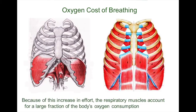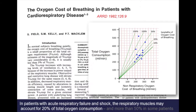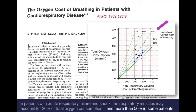Because of this increase in effort, the respiratory muscles account for a large fraction of the body's total oxygen consumption. In healthy subjects, this fraction is only one to three percent of total oxygen consumption. In patients with acute respiratory failure and shock, the respiratory muscles account for twenty percent of total oxygen consumption, and more than fifty percent in some patients.